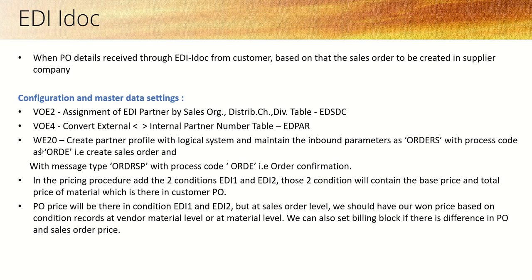On the PO side, we created a partner profile with TCode WE20. The same kind of partner profile setting you have to create in the receiver system. In the receiver system, we also have to create a logical system first, and then on that we will create a partner profile. In the partner profile, we have to maintain the inbound parameters with the message type as ORDERS and the process code ORDE, that is order confirmation.